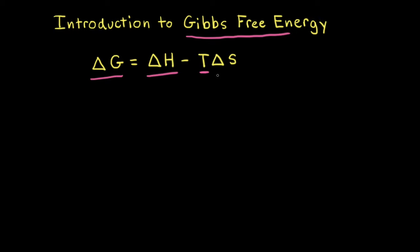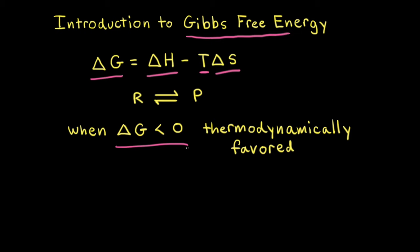When delta G is less than zero, a chemical or physical process is favored in the forward direction. Therefore, we say that the forward process is thermodynamically favored. For example, if we look at a reaction where reactants turn into products, if delta G is less than zero, the forward reaction is thermodynamically favored, meaning the reaction will go to the right to make more products.